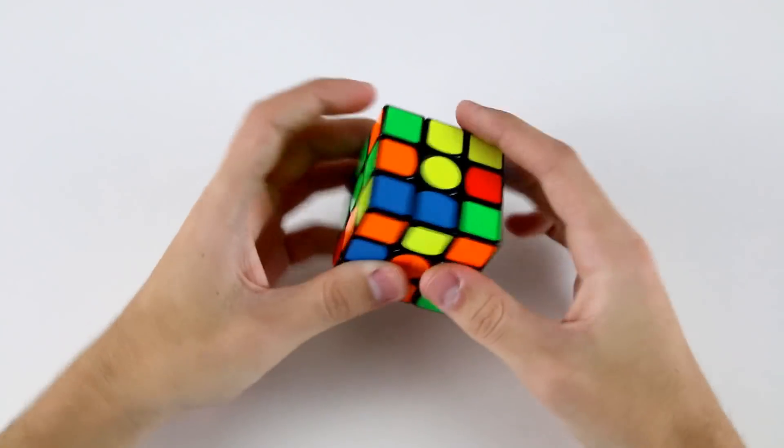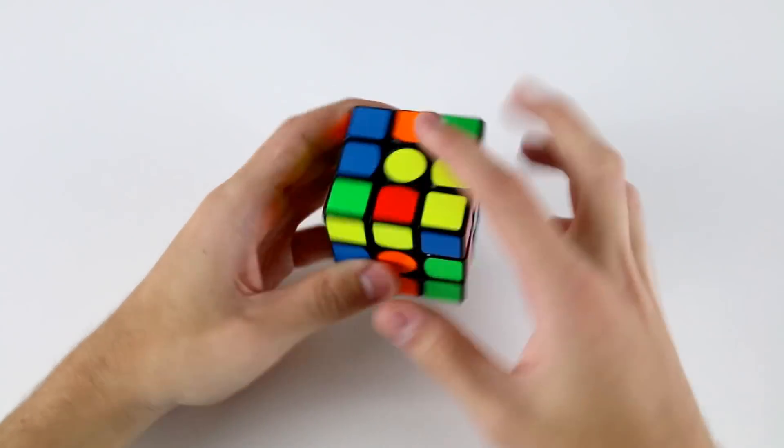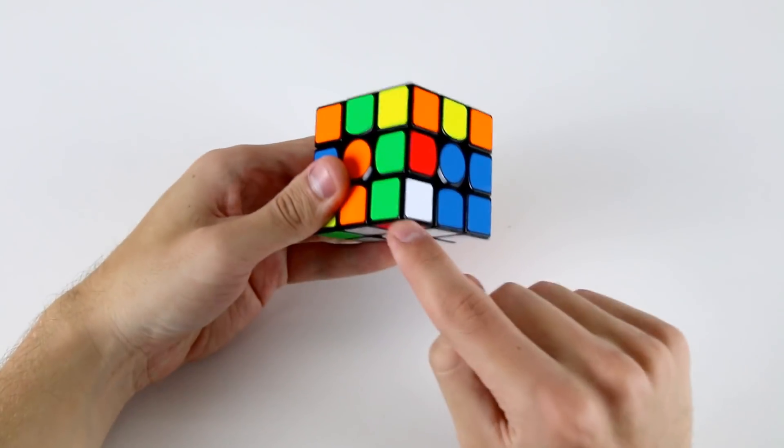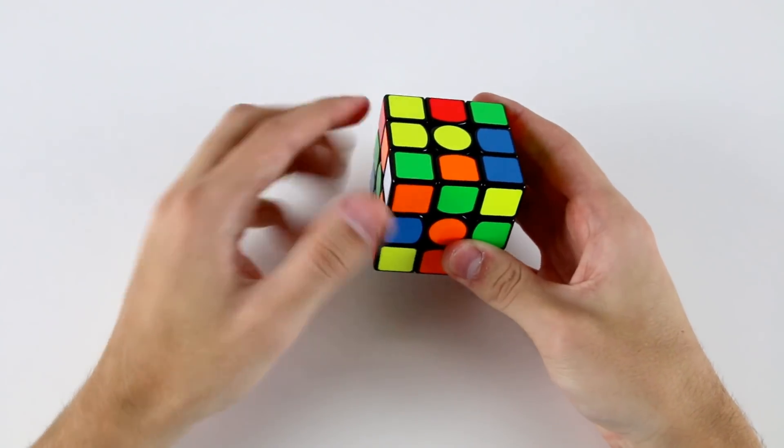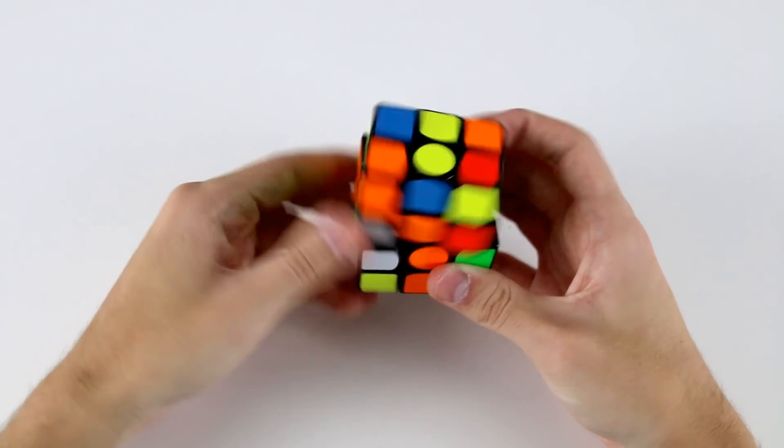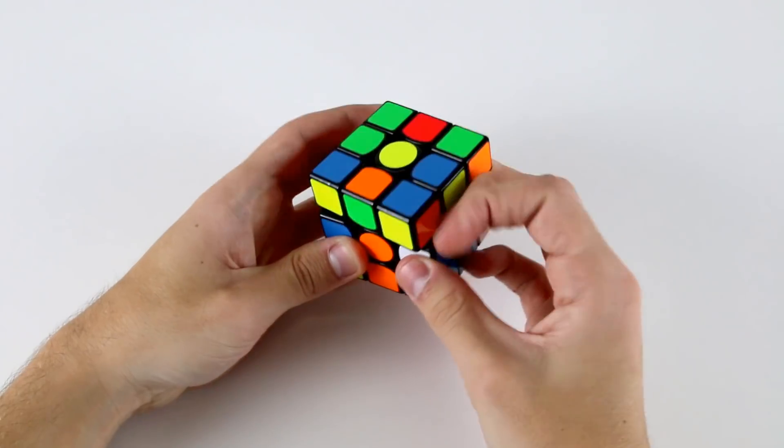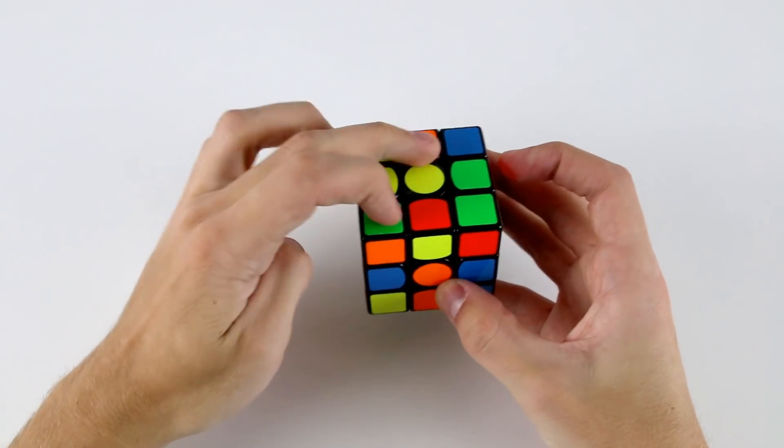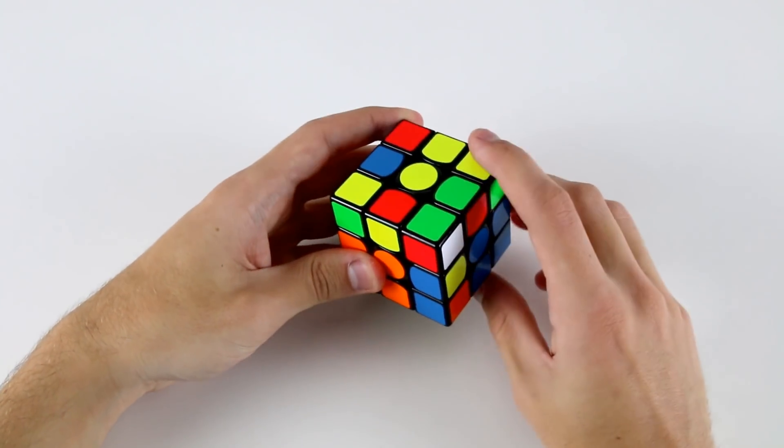Now we've got these two here, which we can do like this. We've got a few different ways to solve this. Remembering that we've got this pair down here which we eventually need to take out into the top layer, it makes more sense. Instead of inserting the pair like that, we can do R U' R' U' to take this pair out and set up this pair. That's a little bit more advanced but it should be fine.